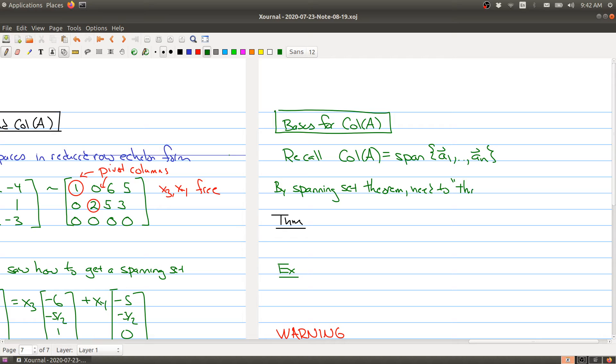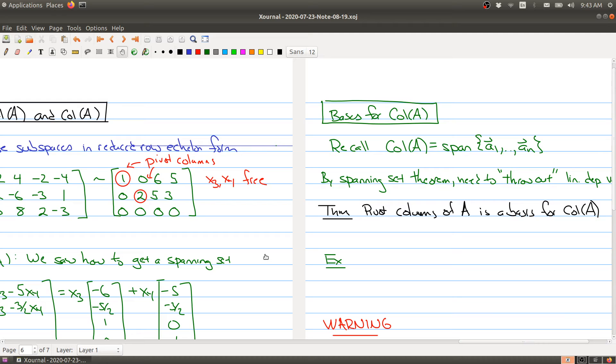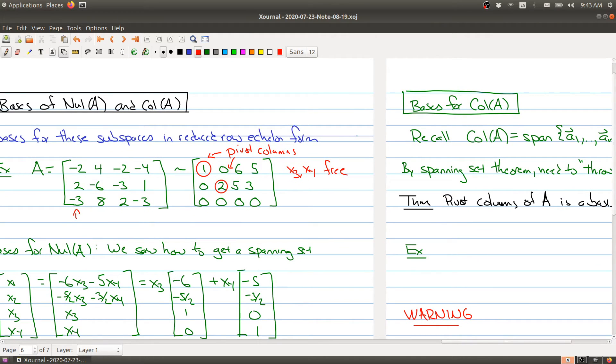Which ones are bad? Some of them we just don't need, and the following theorem tells you which ones you can keep. The pivot columns of A is a basis for the column space of A. You've got to pay attention here. It's the pivot columns of A, not the pivot columns of the reduced form. These guys here are the pivot columns. They're the pivot columns because that's the columns where you have the pivots.